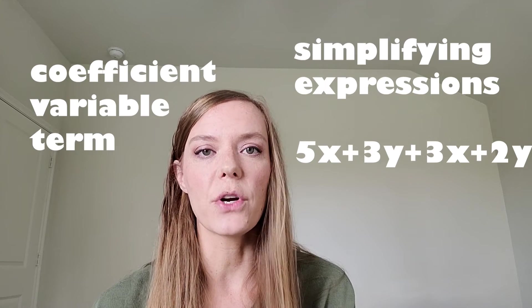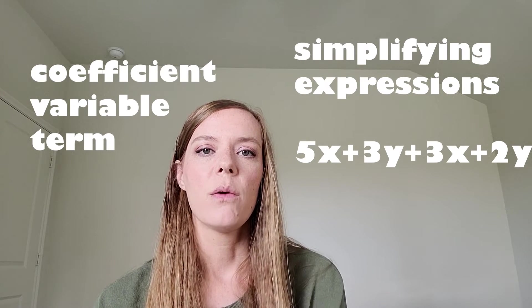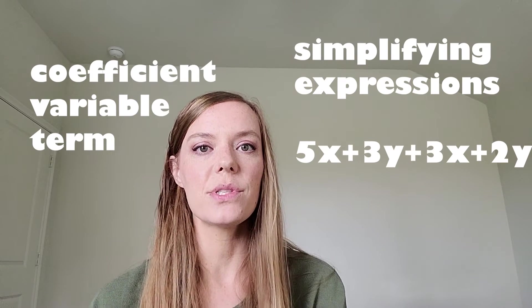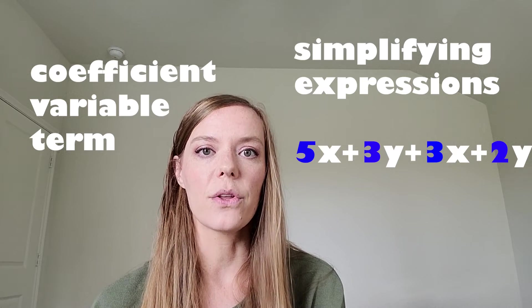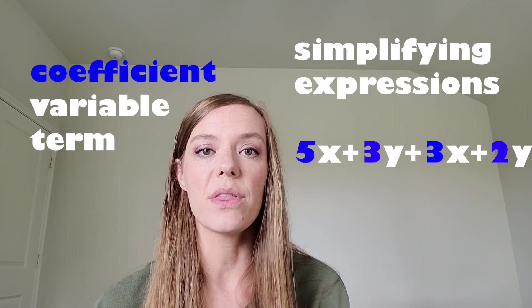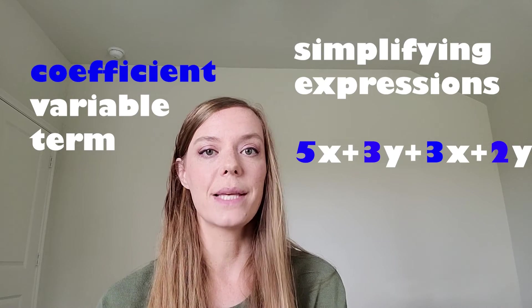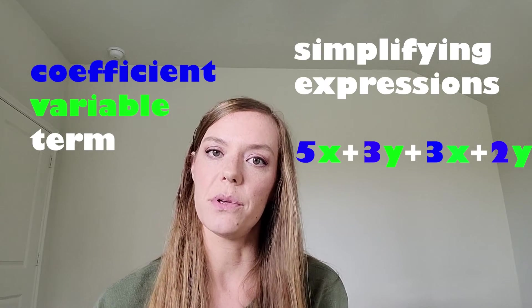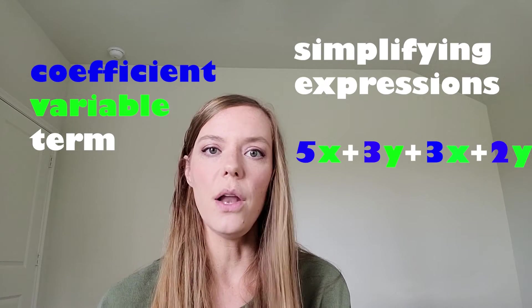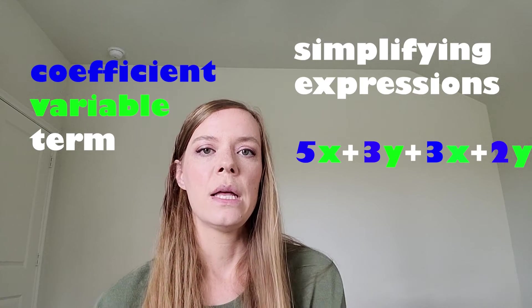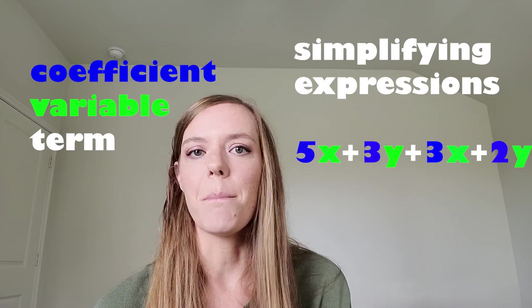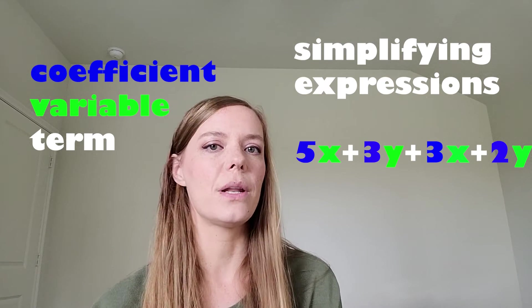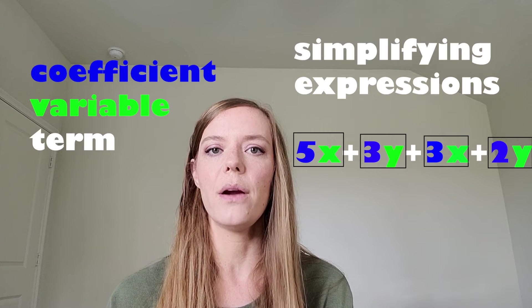Okay, so first things first with that expression up there, we have some different things that we can name. The numbers that are in front of each letter are called the coefficient. We're going to be working with those numbers and in this case adding them. Then the letter that goes along with those numbers are called variables. Those are our unknown amounts that we've worked with before that just represent a missing unknown amount.